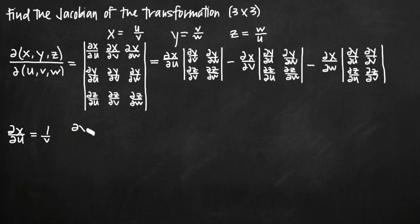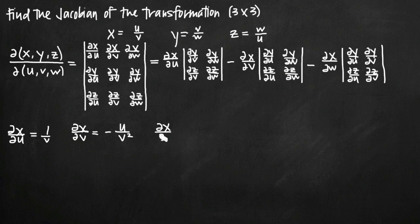When we take the partial derivative of x with respect to v, we treat v as our variable and u as a constant. In this case, what we get is negative u over v squared. If we take the partial derivative of x with respect to w, notice that there is no w in our x equation. That means the derivative is just going to be 0, because u divided by v would be a constant, and the derivative of any constant is 0.